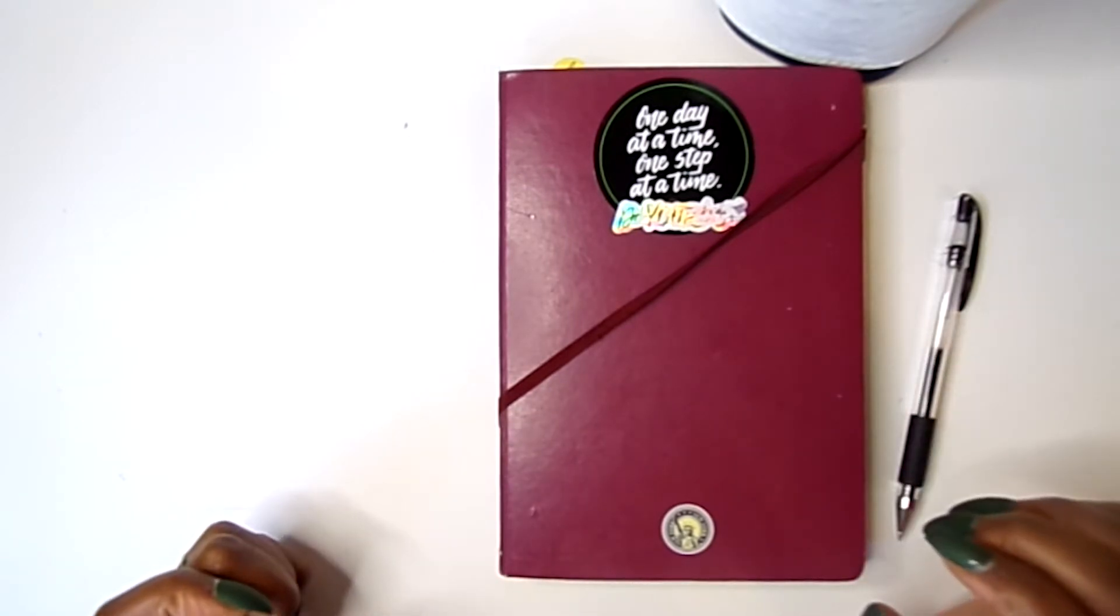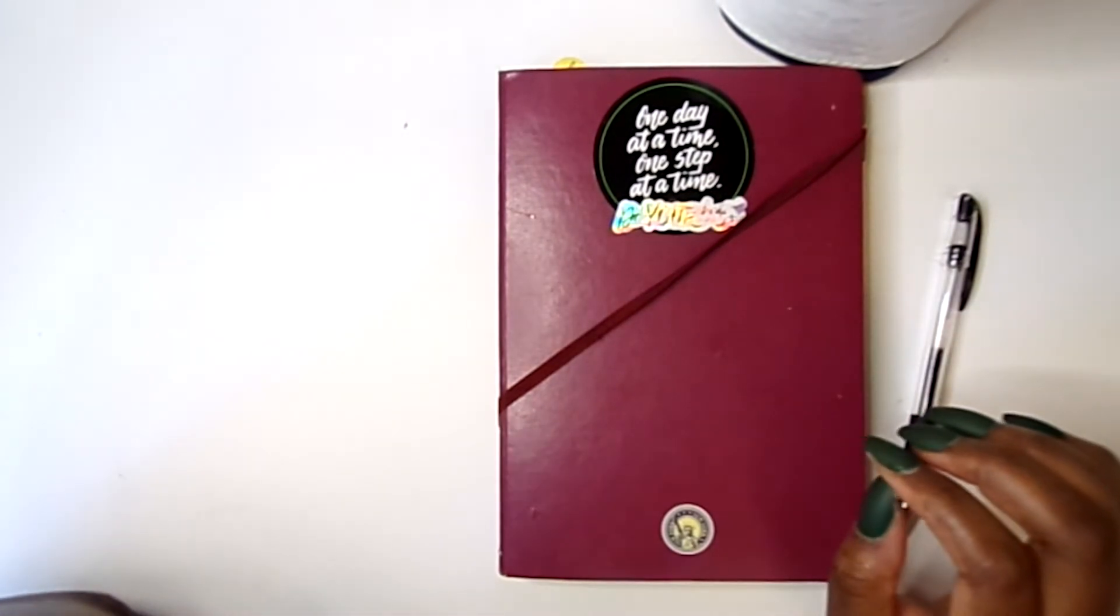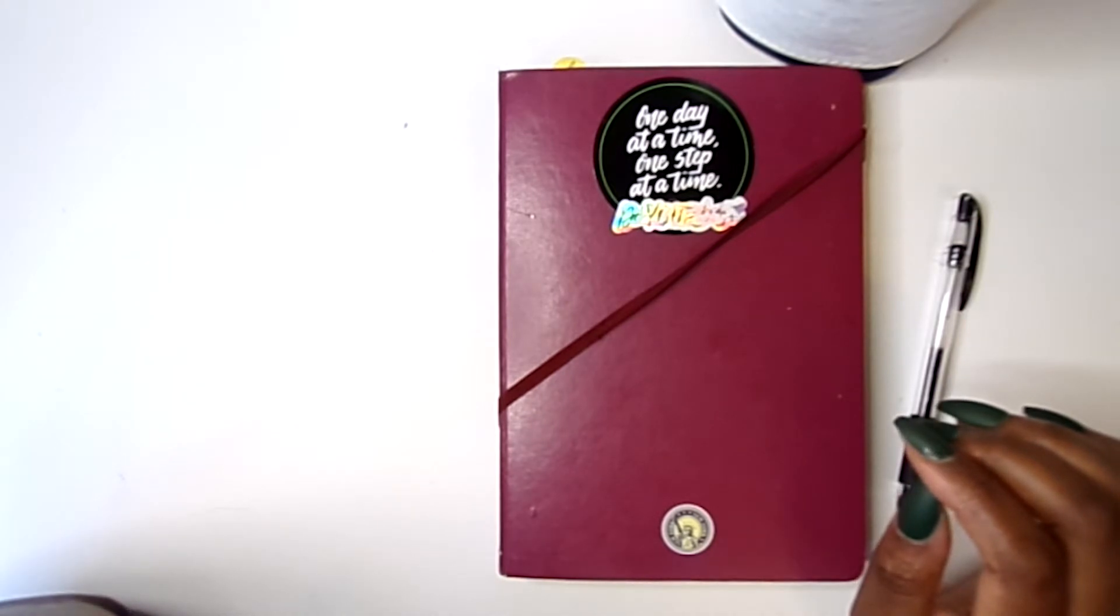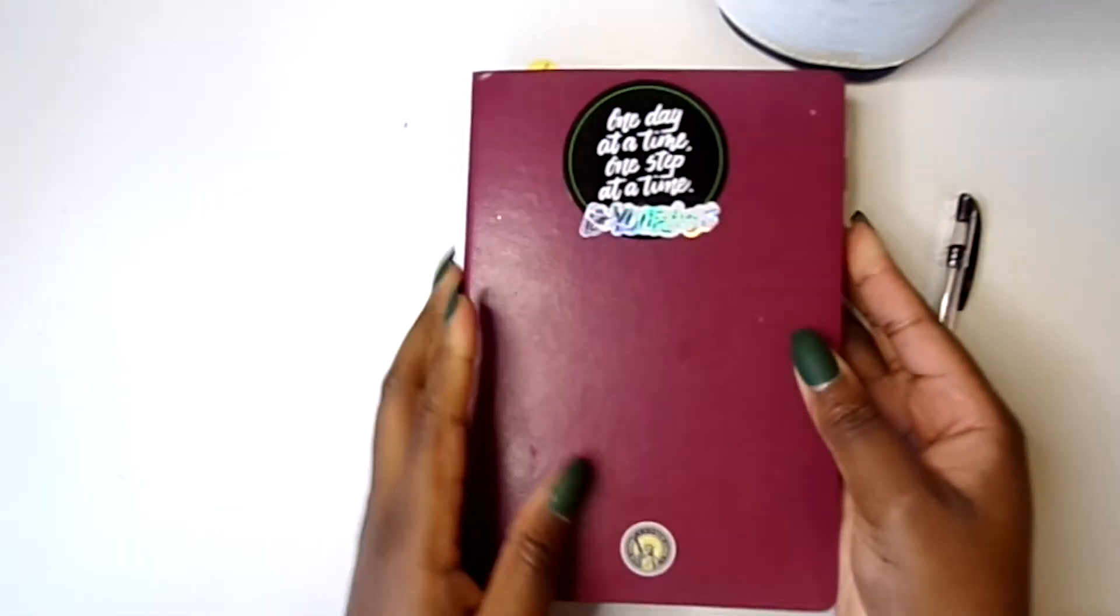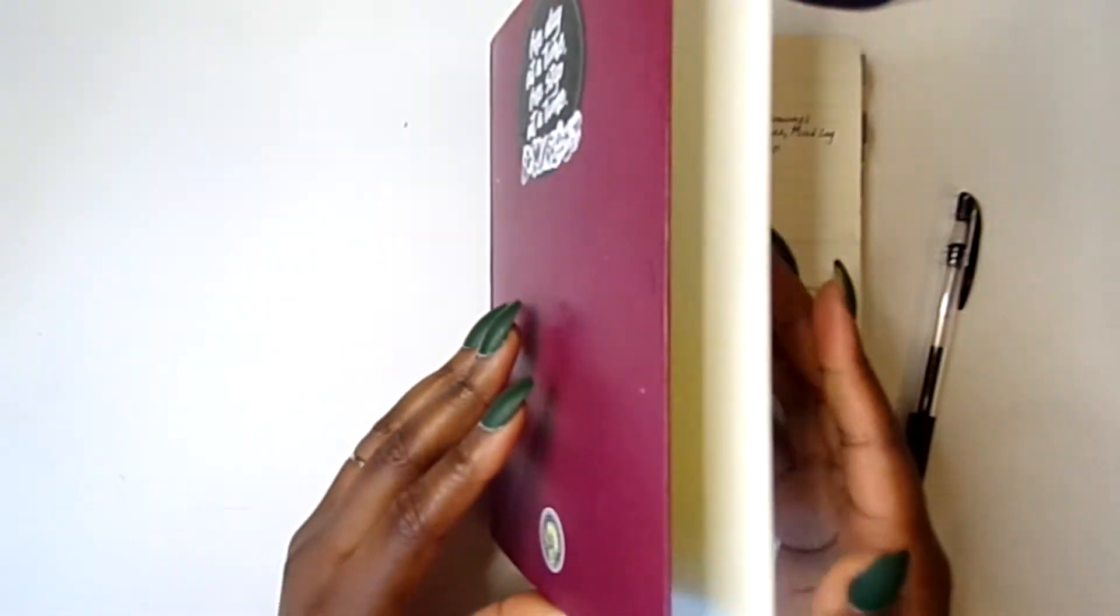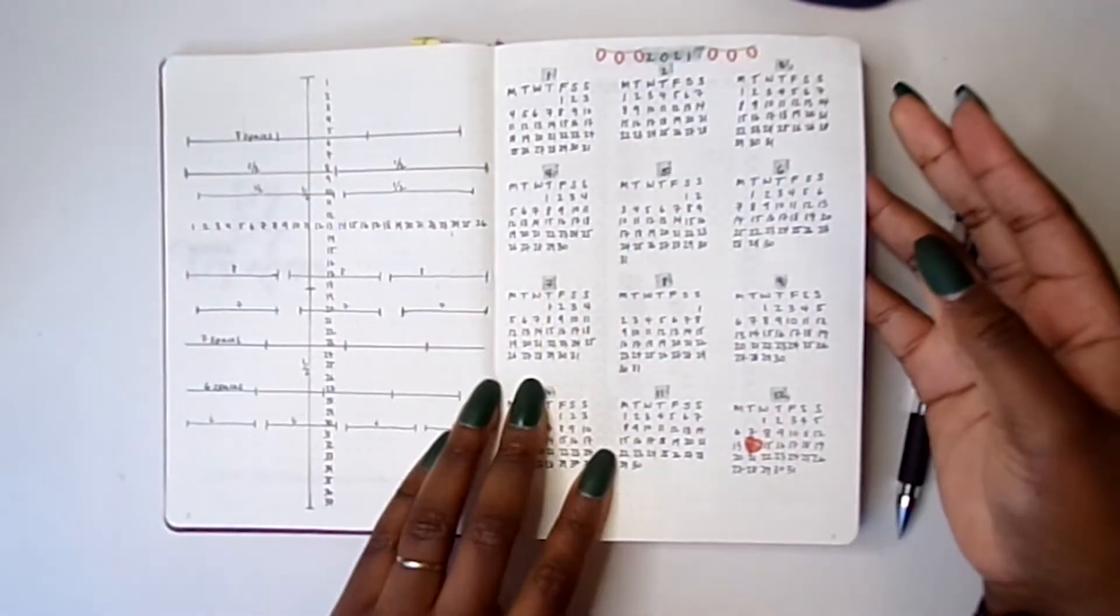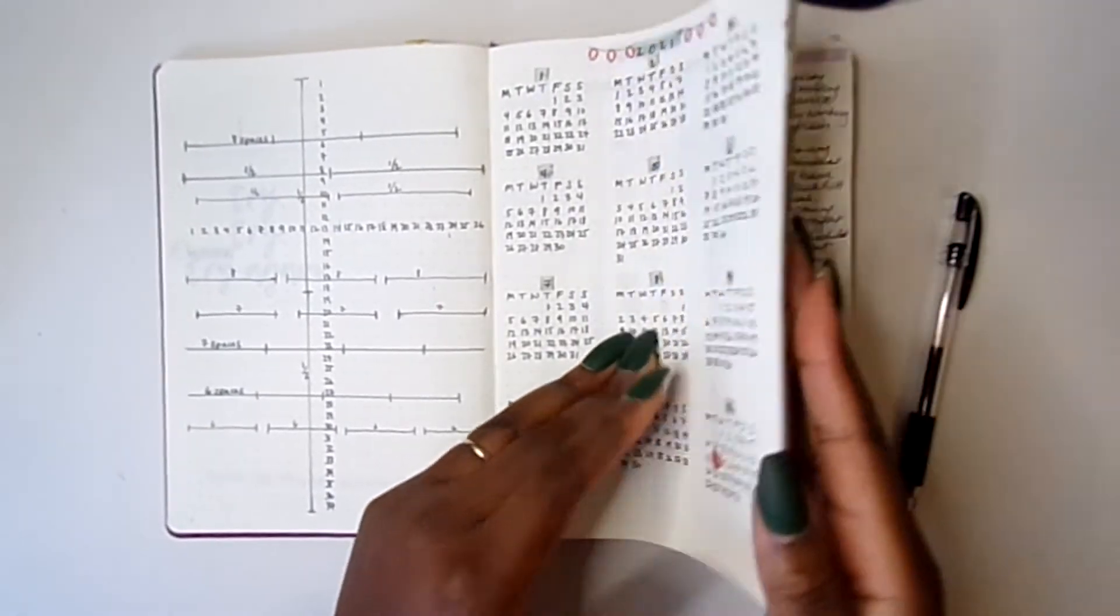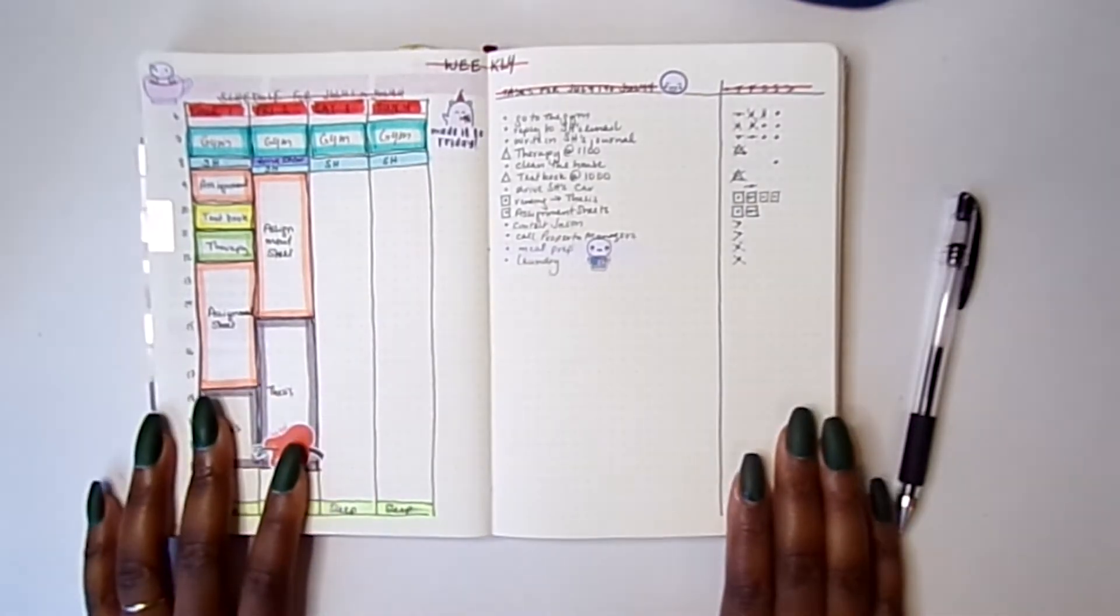Here I am in my A5 Leuchtturm bullet journal, and I'm going to do a plan with me, a weekly plan with me for the week of July 5th to July 11th. This is the current week we're in. As you can tell, the weekend has been blank because I am doing absolutely nothing this weekend.